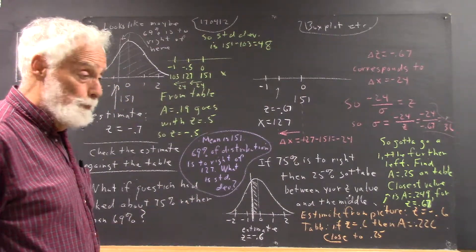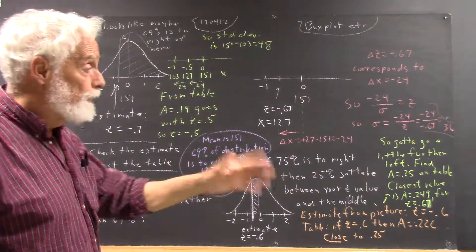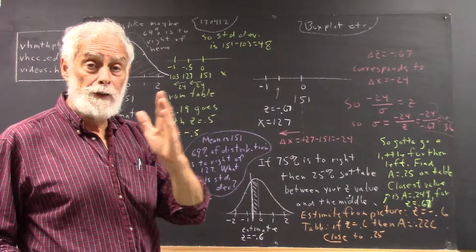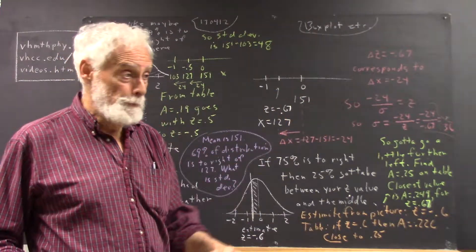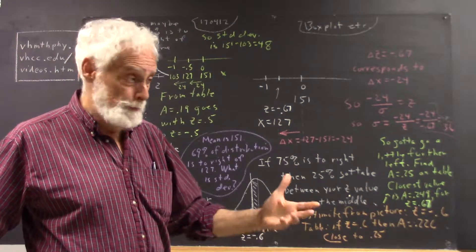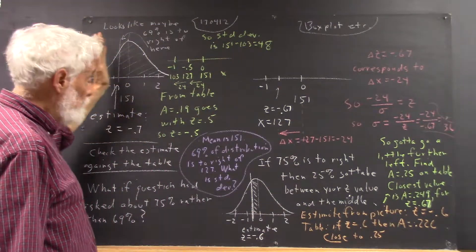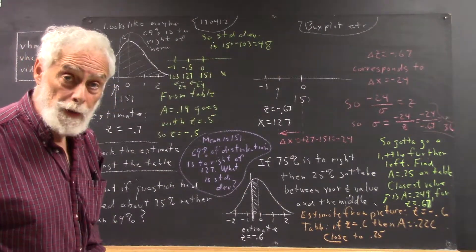Second step, we put our information on that curve. What's our information? We don't care that that point is 127 at this time. We simply say, okay, let's find the place where 69% of the distribution is to the right.